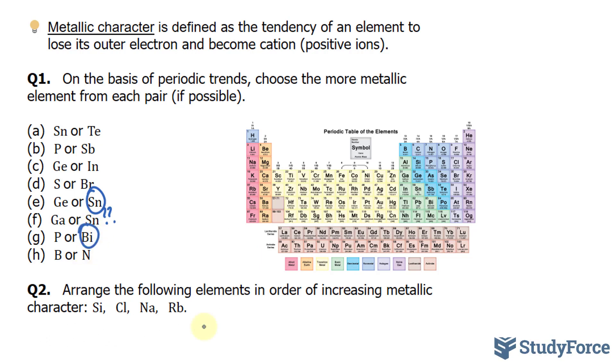And lastly, for question one H, we're comparing B with N. Boron versus nitrogen. Boron is to the left of nitrogen, so it is more metallic.